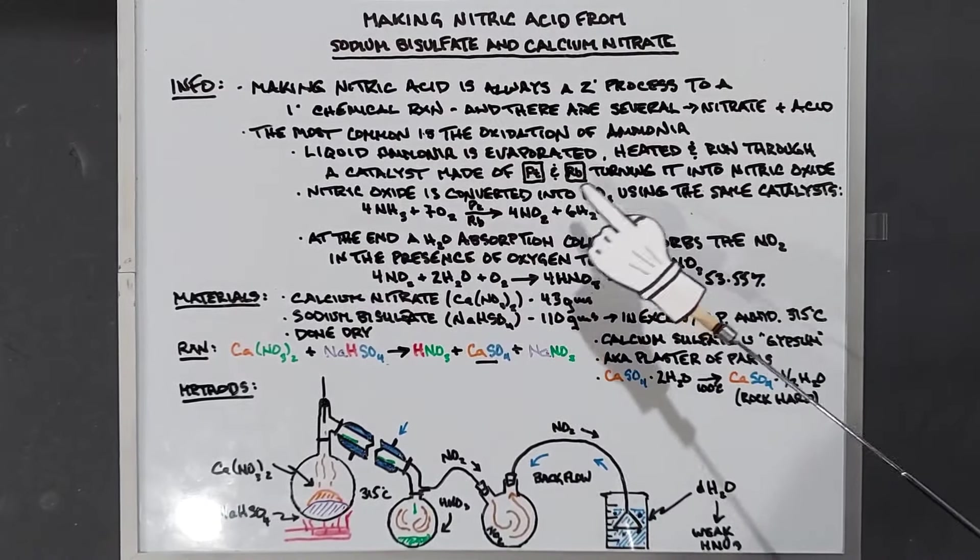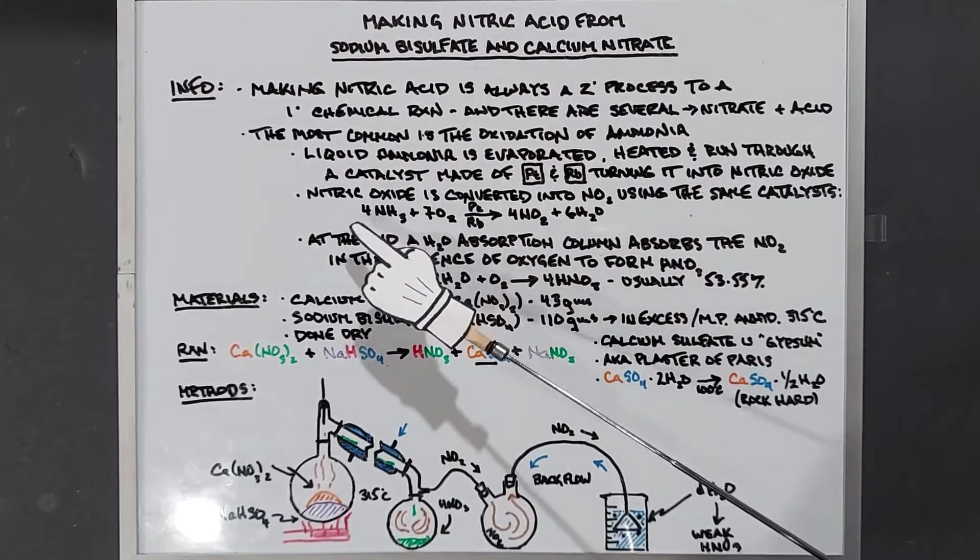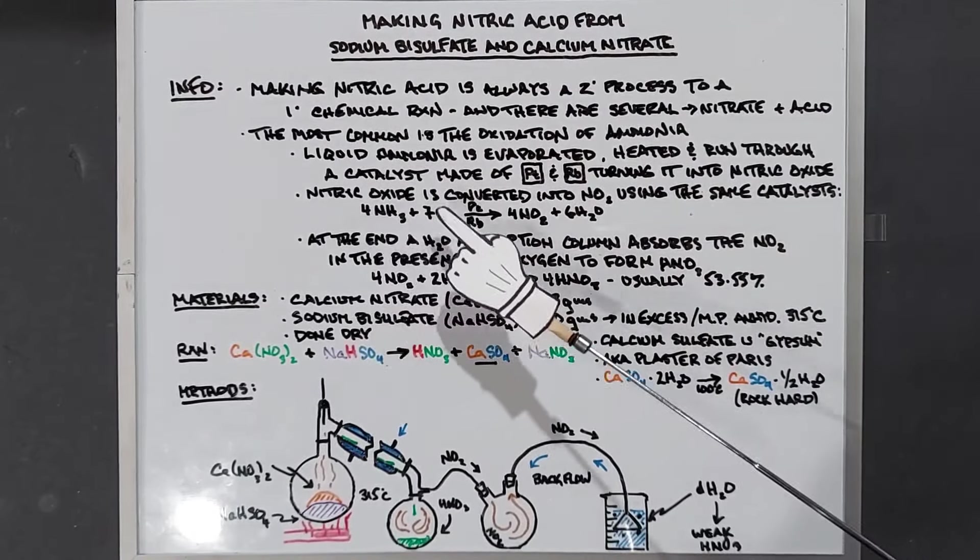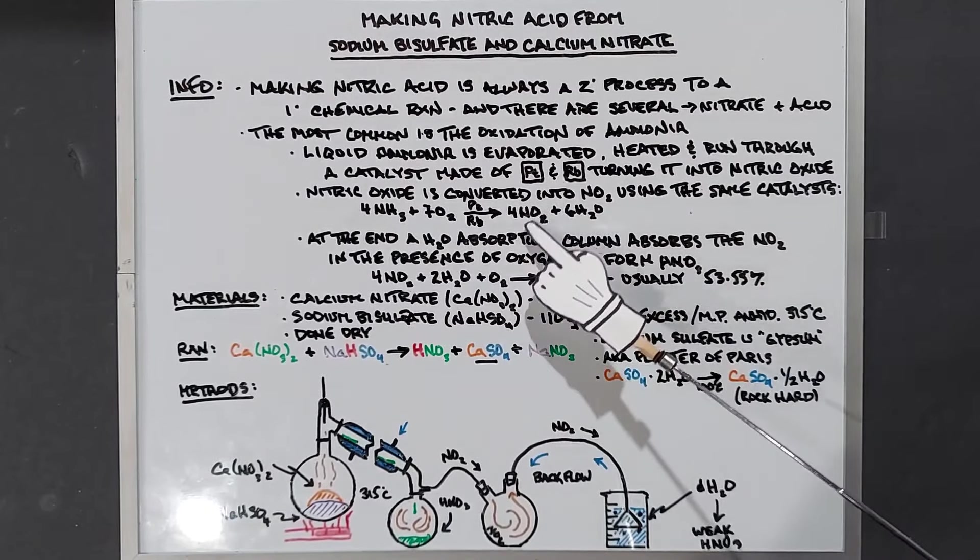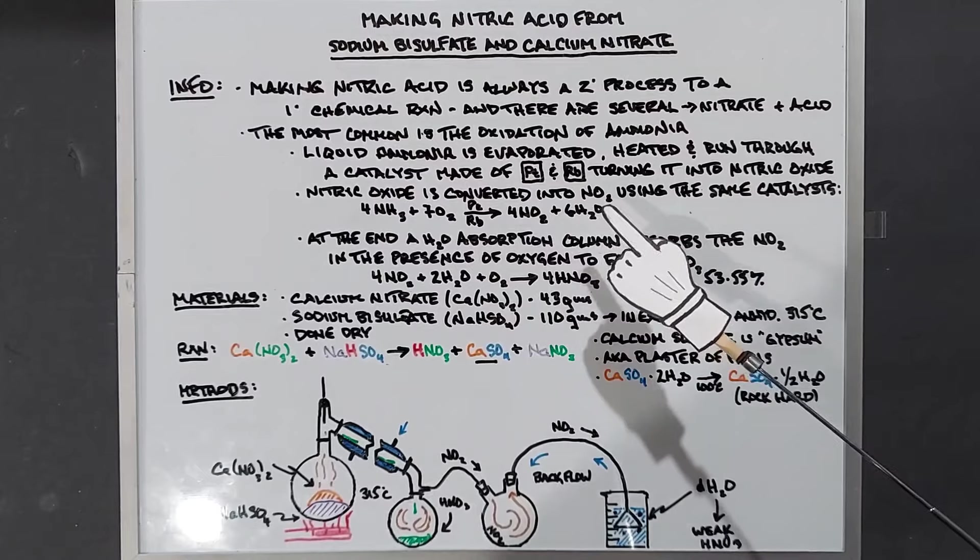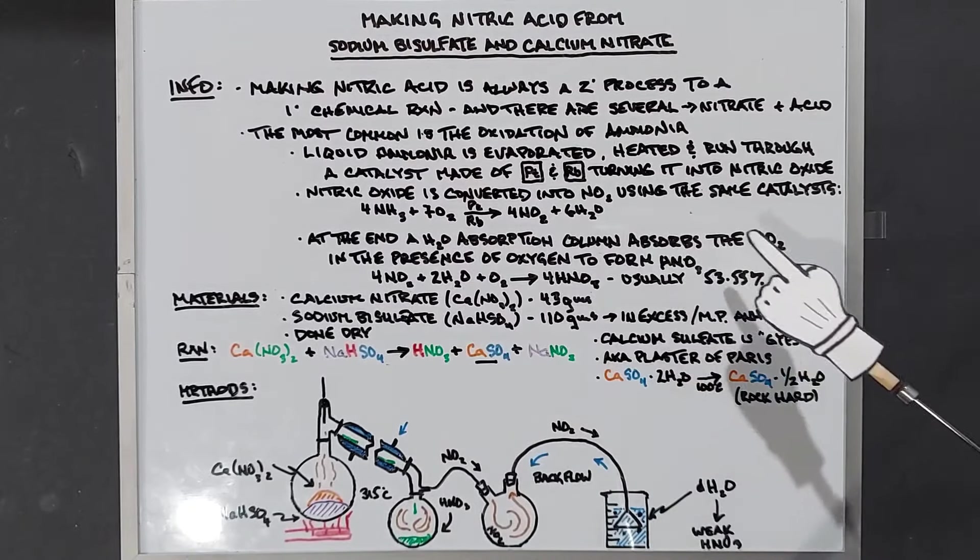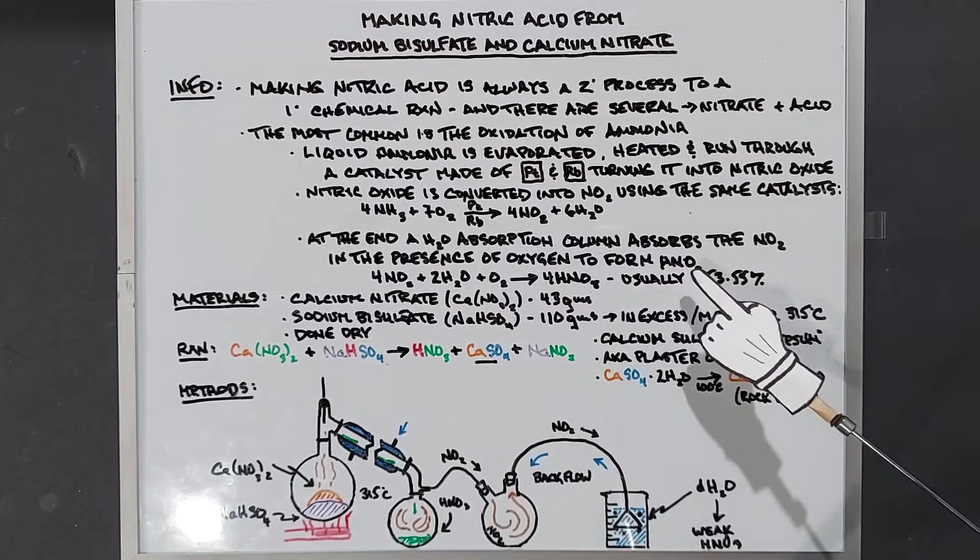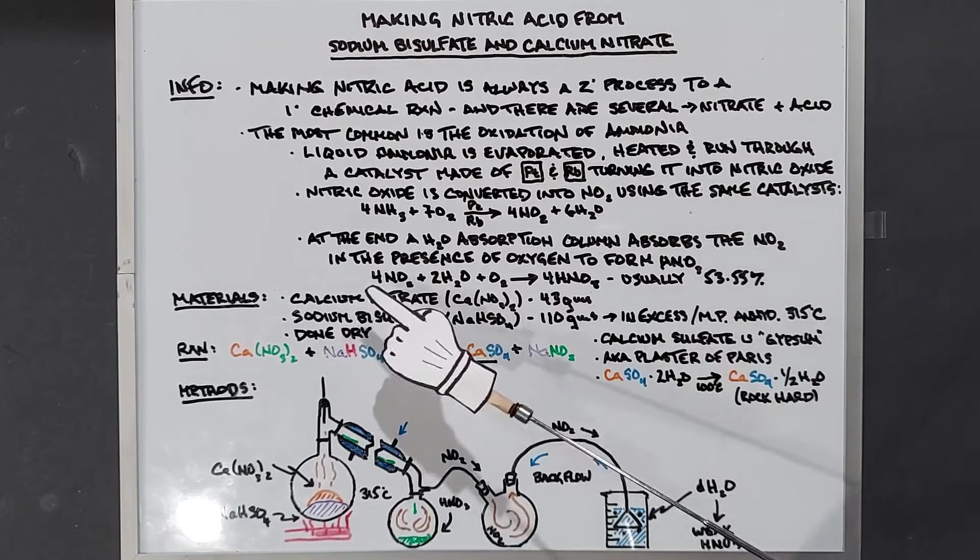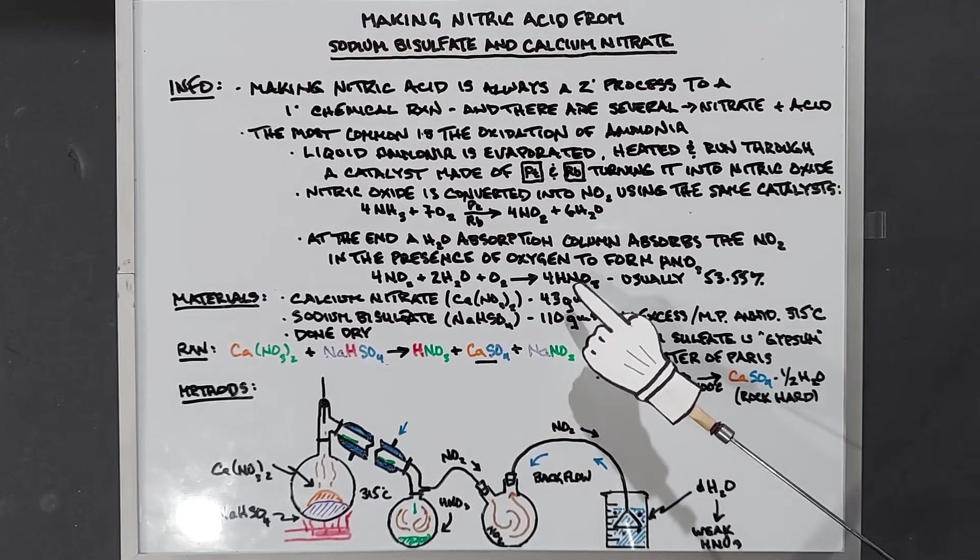Nitric oxide is then converted into nitrogen dioxide using these same catalysts, and the reaction equation for that is 4NH3 plus 7O2. The two catalysts yield 4NO2, there's our nitrogen dioxide, and six waters. At the end of this process there is a water absorption column that absorbs the nitrogen dioxide in the presence of oxygen to form HNO3 or nitric acid. That equation is 4NO2 plus 2H2O plus O2 yields 4 nitric acids.